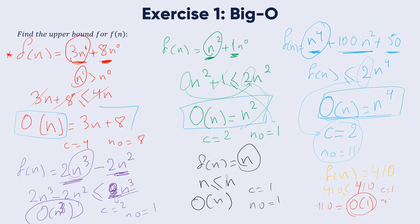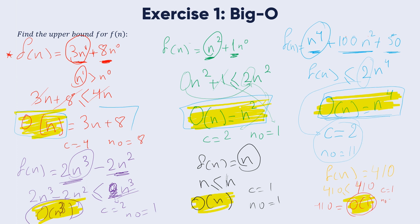In this exercise we have learned how to calculate Big O notation for different functions — how to find the highest degree term. We solved multiple O(n) notations. In the next videos we will learn more about these notations and work with more exercises. The key takeaway is that the Big O notation for any function is determined by the highest degree term it contains.